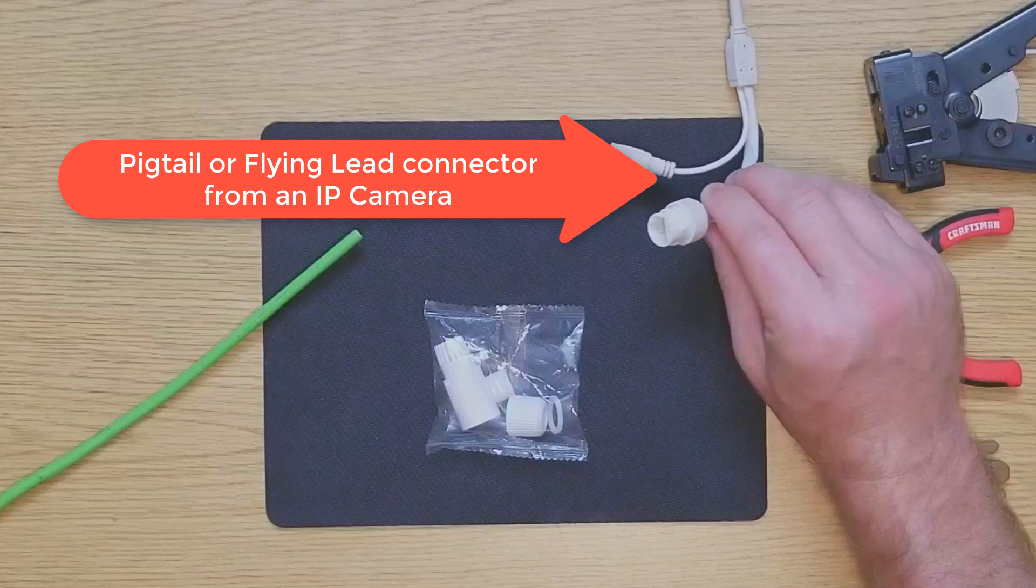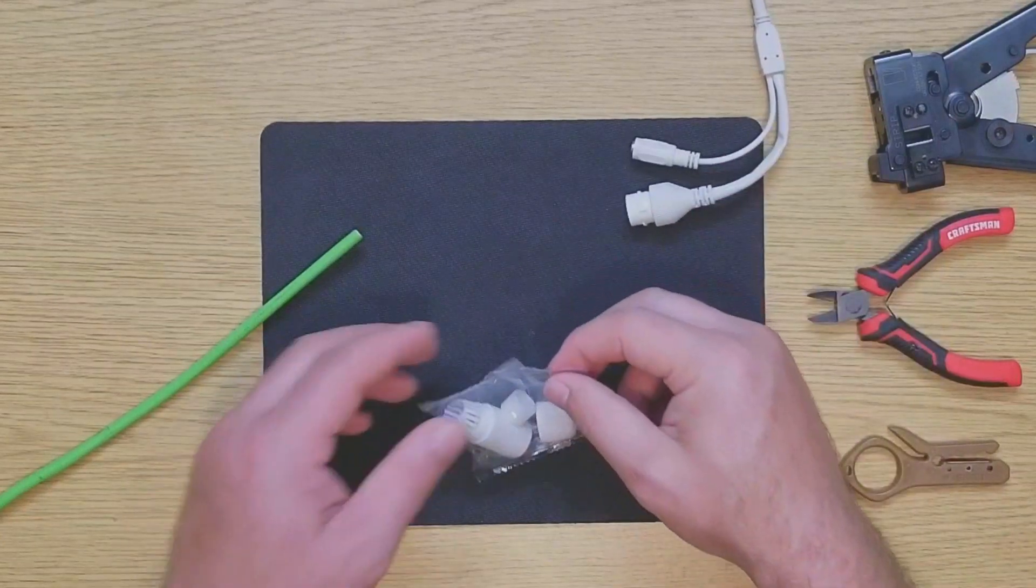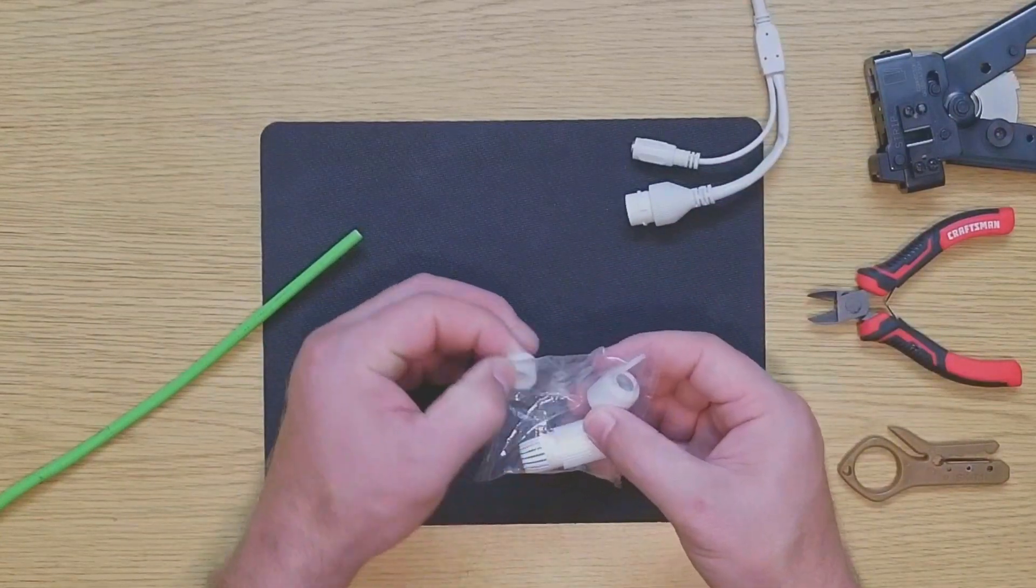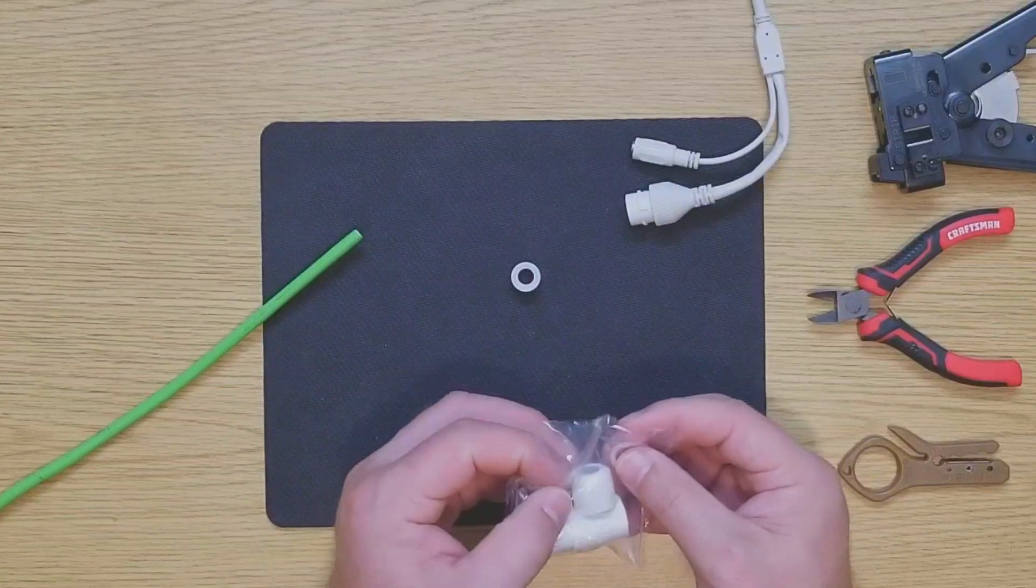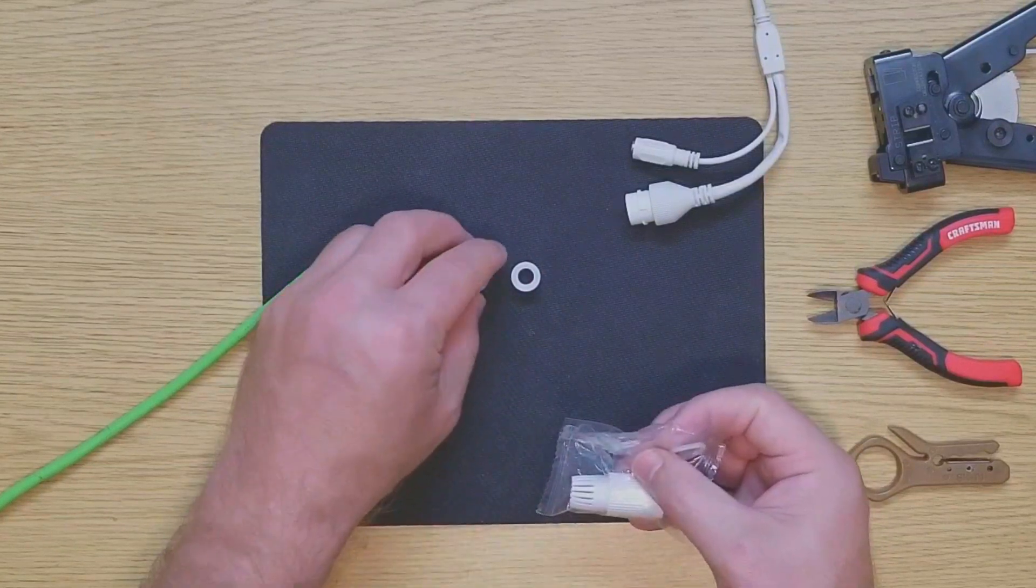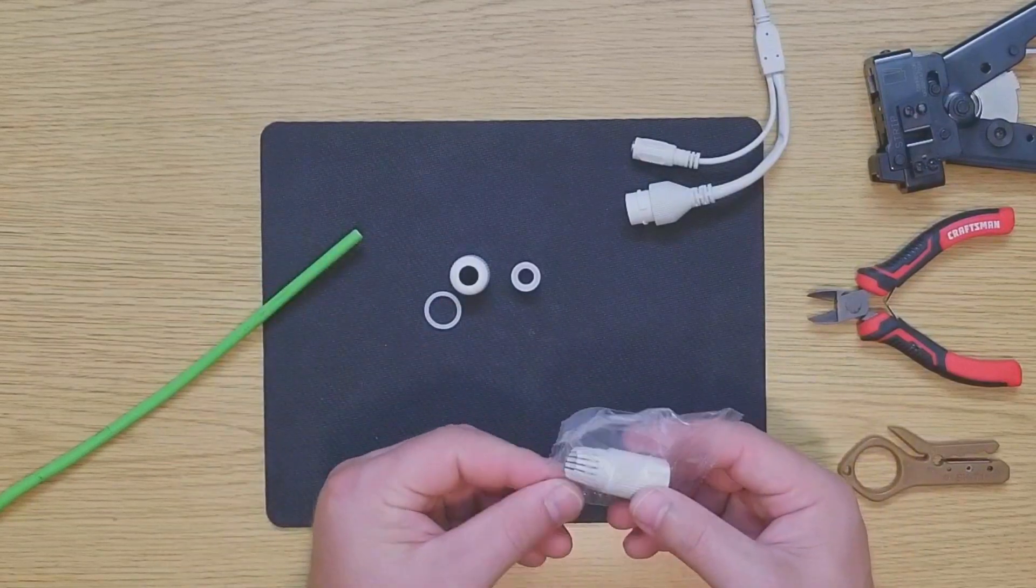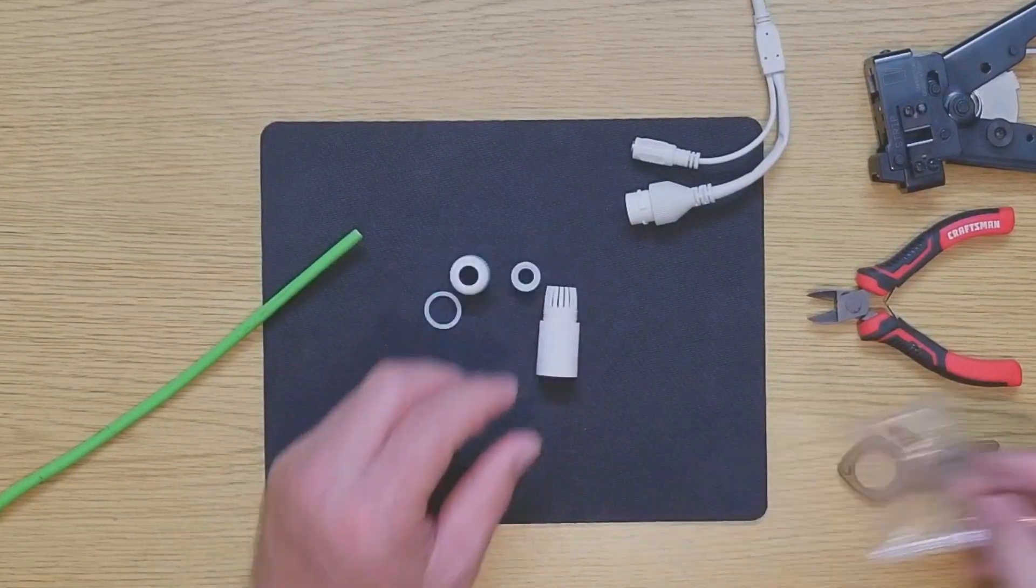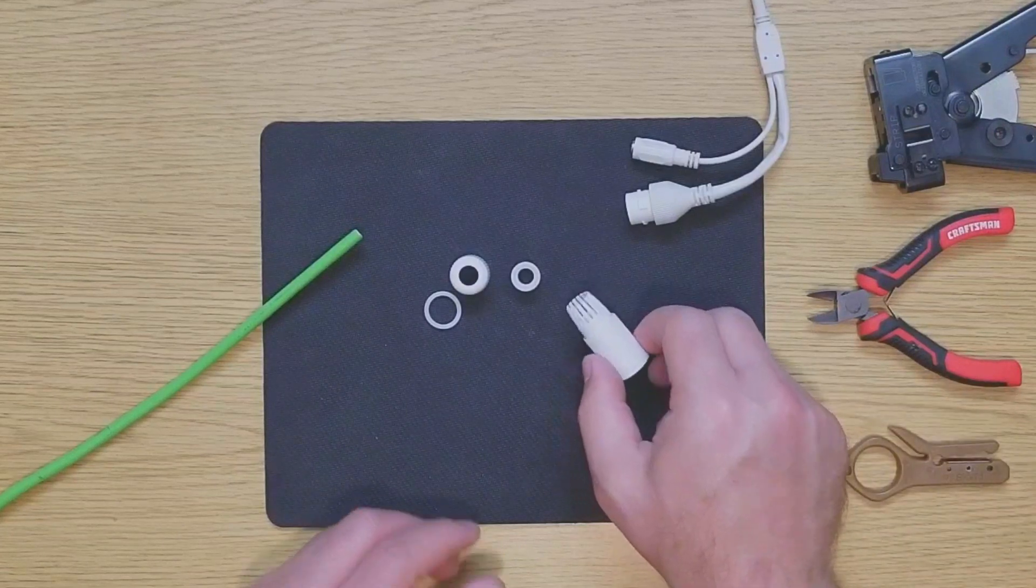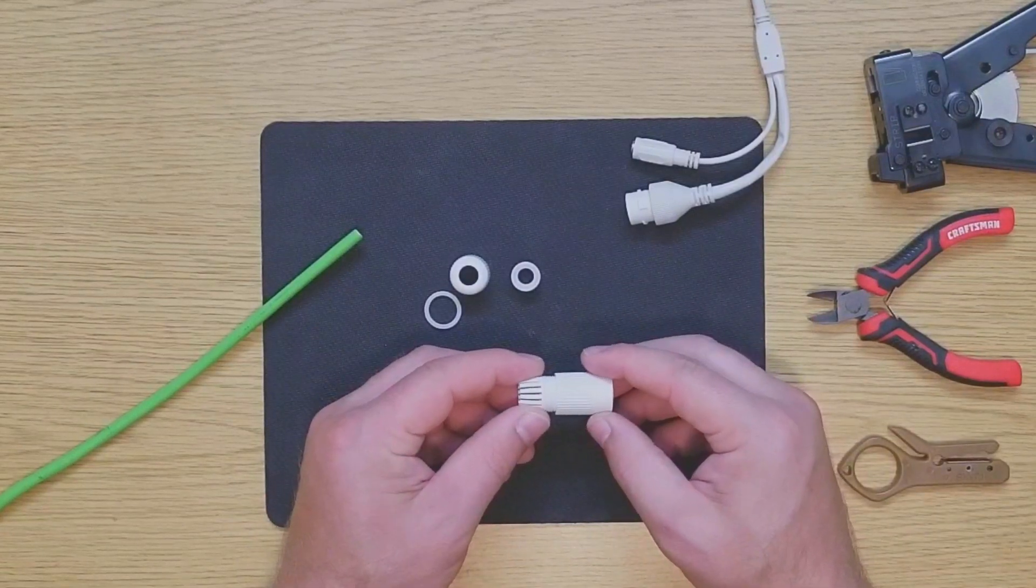Inside the kit you're going to find four different parts: the compression grommet, the compression screw-on cap, a waterproof gasket, and the mating ethernet connector body. Let's take a little closer look at the main connector body.